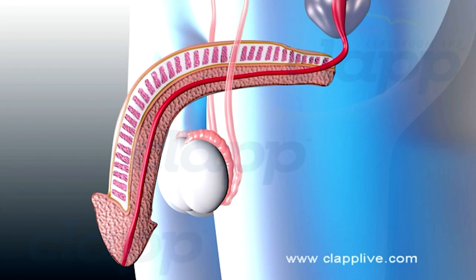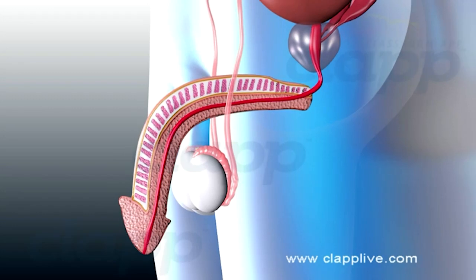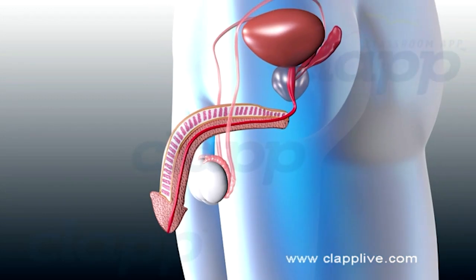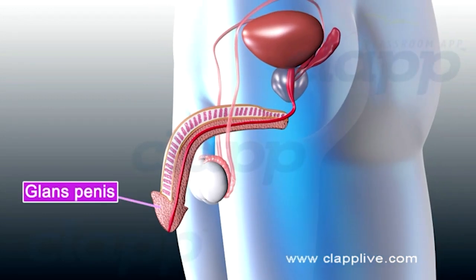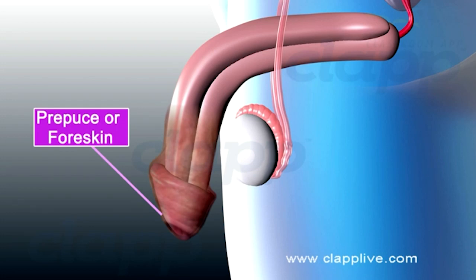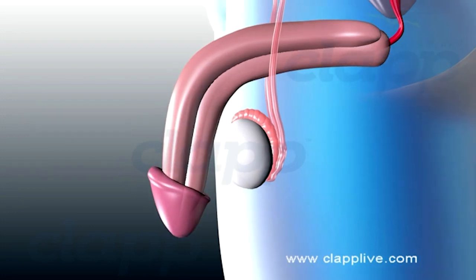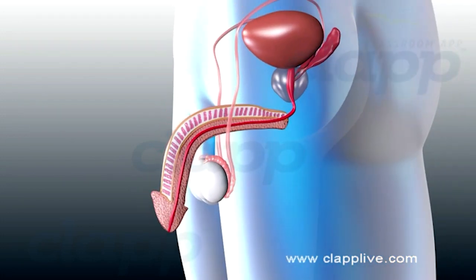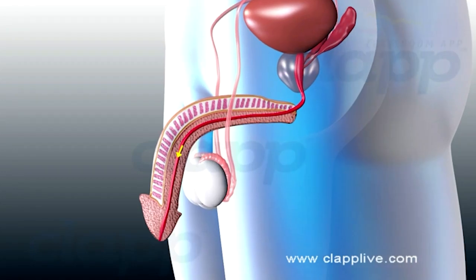The corpus spongiosum is expanded to form a highly sensitive conical structure near the tip of the penis, termed the glans penis. This is covered by a retractable fold of skin called the prepuce or foreskin. The urethra extends through the penis and opens out through an opening called the urethral meatus.